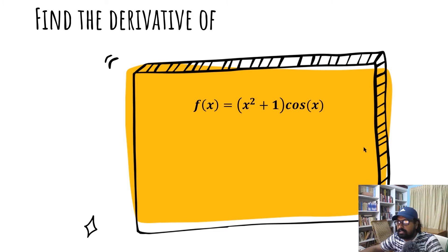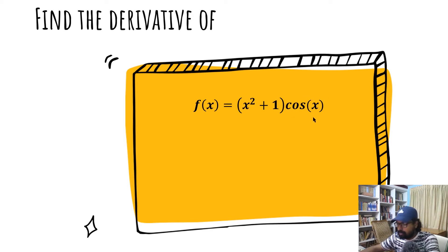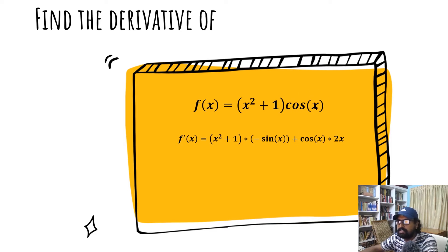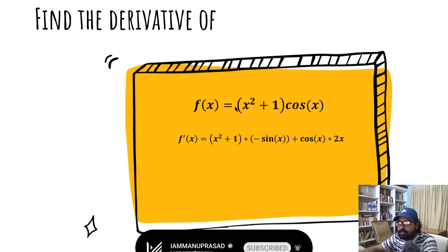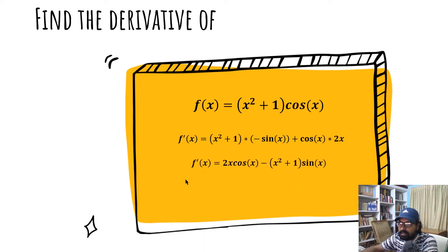Let's take a look at the product rule. The example is f of x is equal to x squared plus 1 into cos x. Here x squared plus 1 is the first term and cos x is the second term. Applying the product rule: first term derivative times second term plus second term derivative times first term. So f prime of x equals 2x cos x minus x squared plus 1 into sin x.